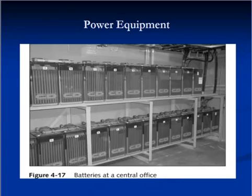Every central office must have reliable sources of power in case of power failure so that switches can operate and customers will continue to have telephone services. For intermediate emergency power, the CO relies on banks of batteries. After a short period of time, electrical generators can begin supplying emergency power.